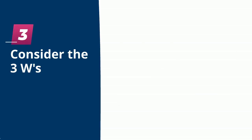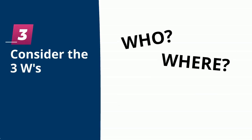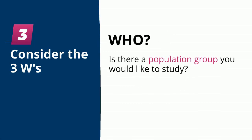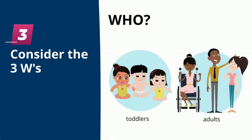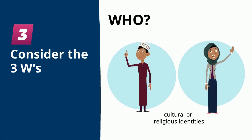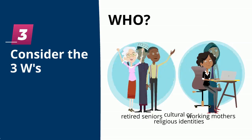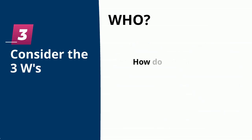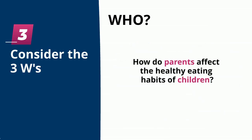Next, consider the three W's: who, where, and when. You don't have to narrow your topic by all three, but it's a good idea to think these through and decide if any of these concepts are important for your topic. Let's start with who. Is there a population group you would like to study? Maybe an age group like toddlers or adults, a cultural or religious identity, or a life stage such as retired seniors or working mothers. For example, you might ask: how do parents affect the healthy eating habits of children?